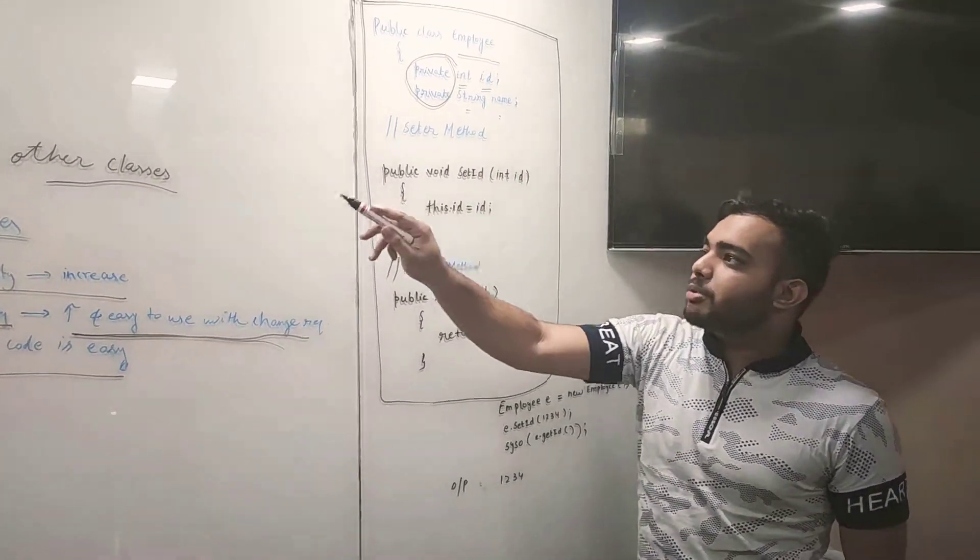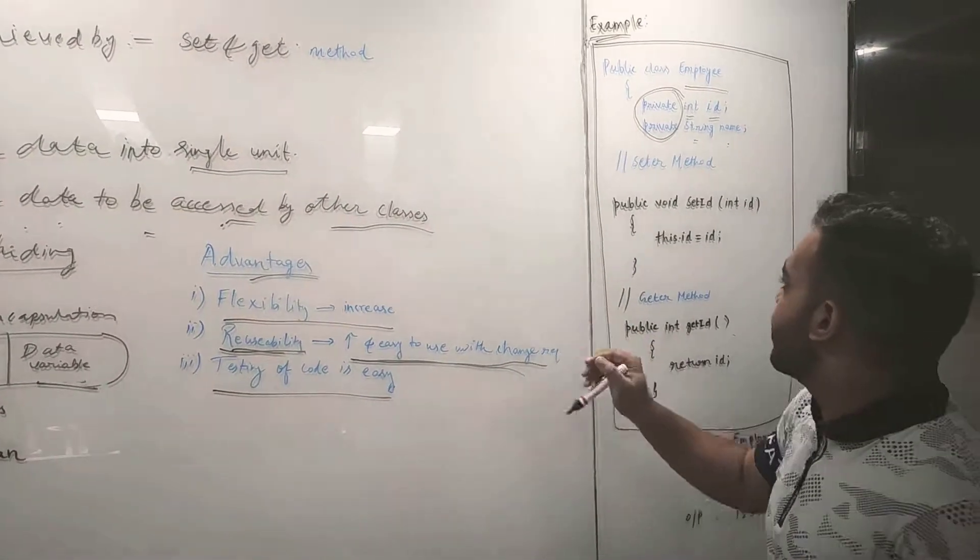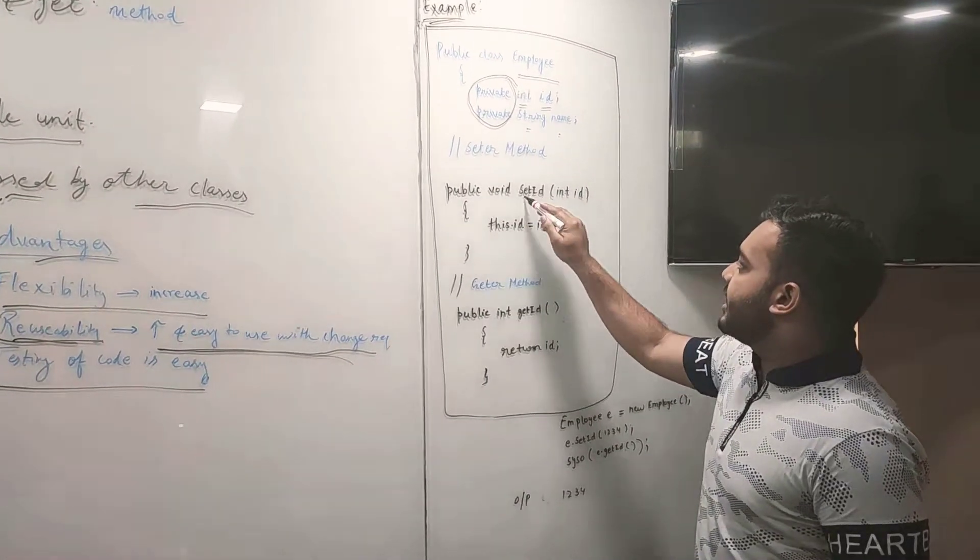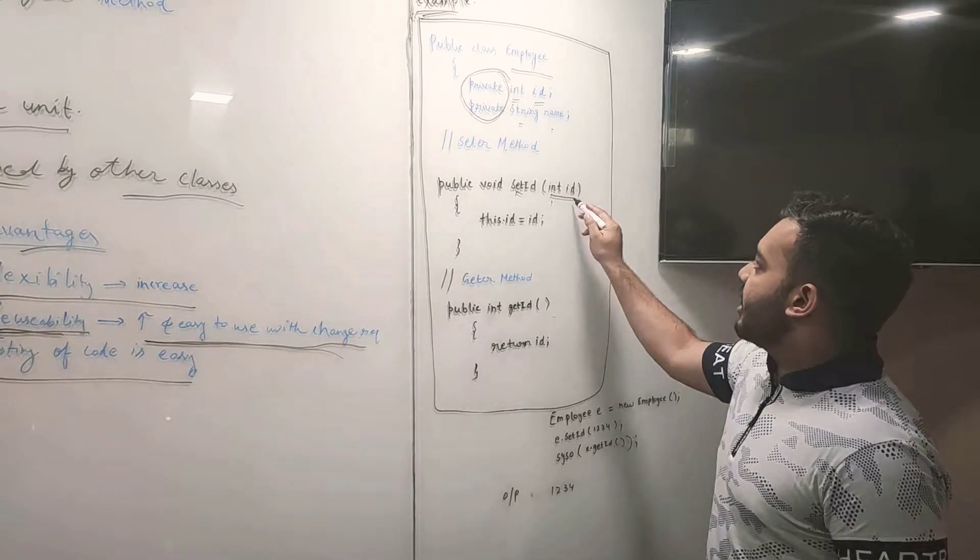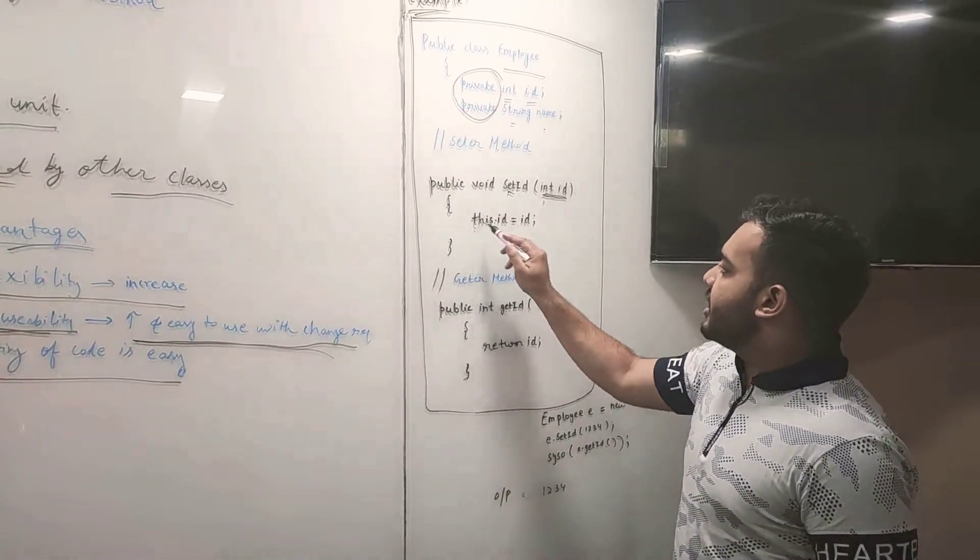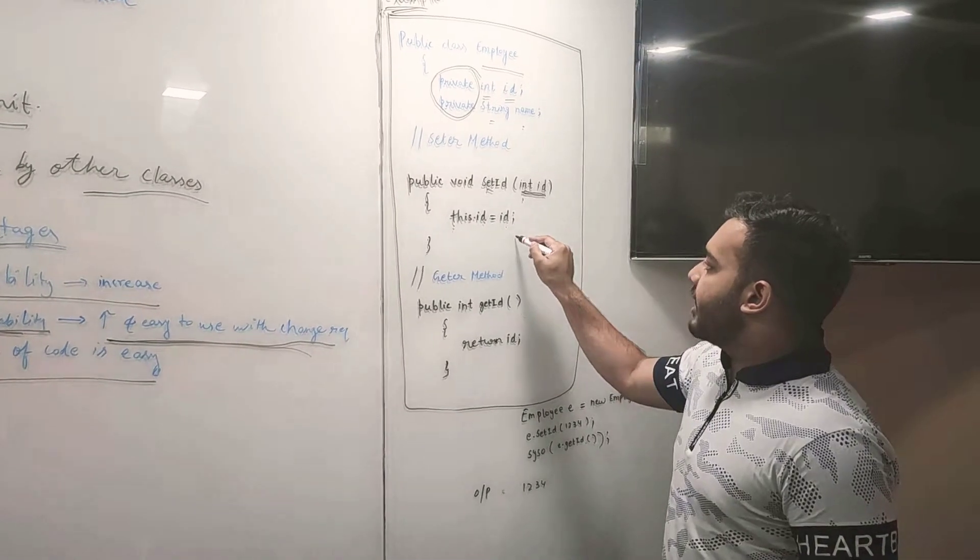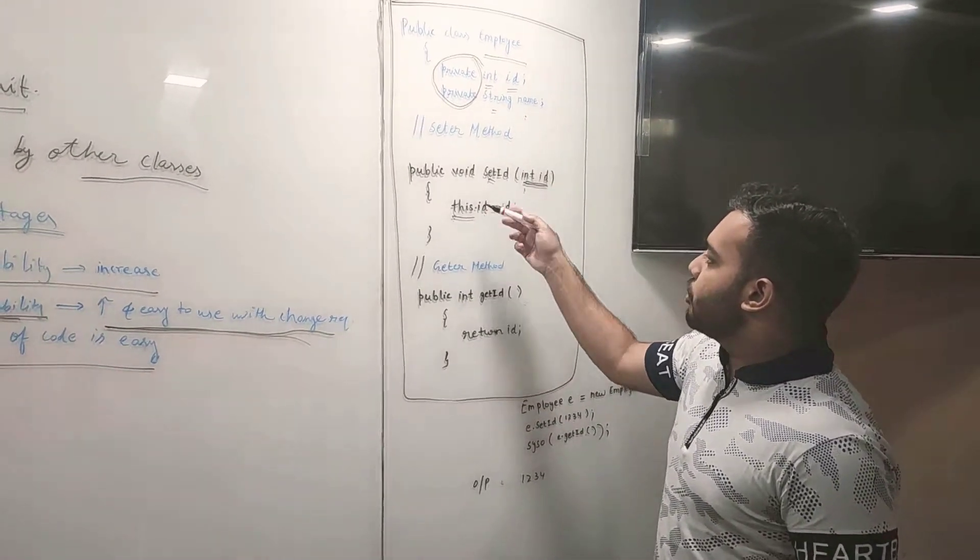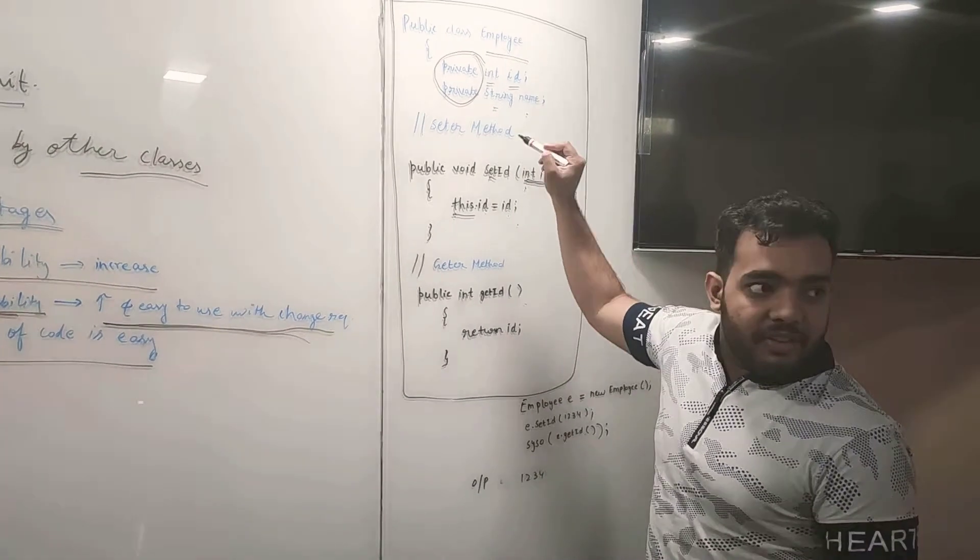Encapsulation can be achieved by using set and get methods. First we have to set the id. We have given a parameter and in the body we have written this.id equals id. The this keyword is used to point towards the global variable.